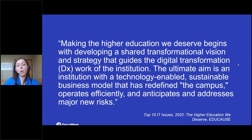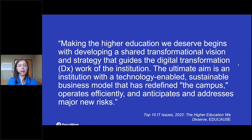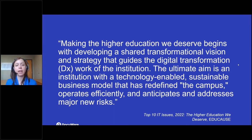I want to end with this quote from a recent article from Educause on the top 10 IT issues facing higher education. They talk about digital transformation: 'The ultimate aim is an institution with a technology-enabled, sustainable business model that has redefined the campus organization, operates efficiently, and anticipates and addresses major new risks.' The idea is to have technology that enables us to be proactive, not reactive — future-proof and ready for anything.